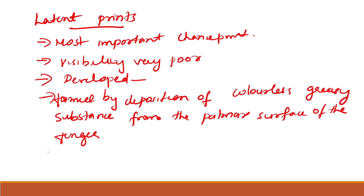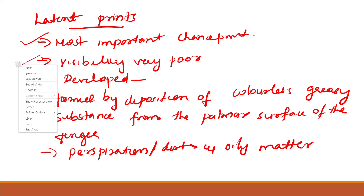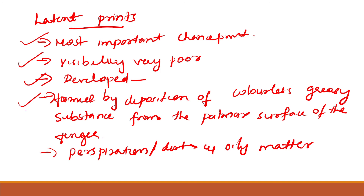The greasy substance that forms latent fingerprints comes from perspiration, dirt, and oily matter carried by the fingertips from sources like the face, hair, and skin. Because latent prints are not visible to the culprit, there is less chance of the surface being cleaned before leaving the crime scene, which is why development is required to make them visible.